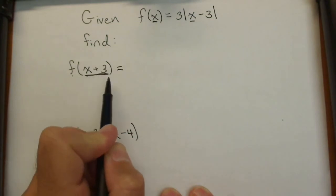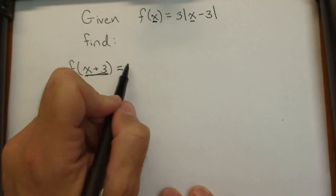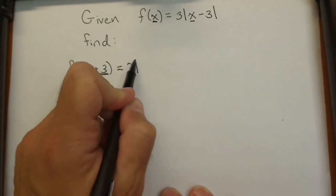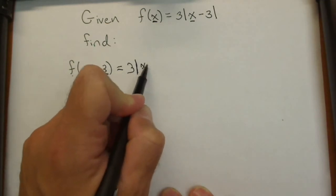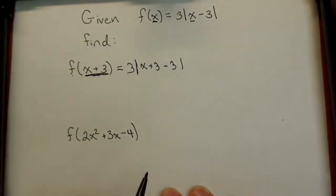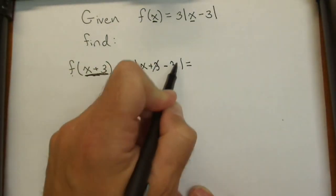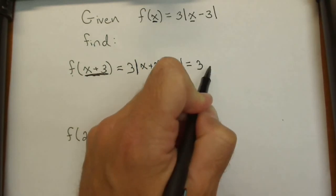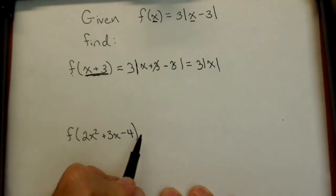For this one, we're going to have three times the absolute value. Now here's our new input, so our input goes in as x+3 minus 3. Close our absolute value. Those threes, the positive and negative three, cancel. Our final answer will be three times the absolute value of x.